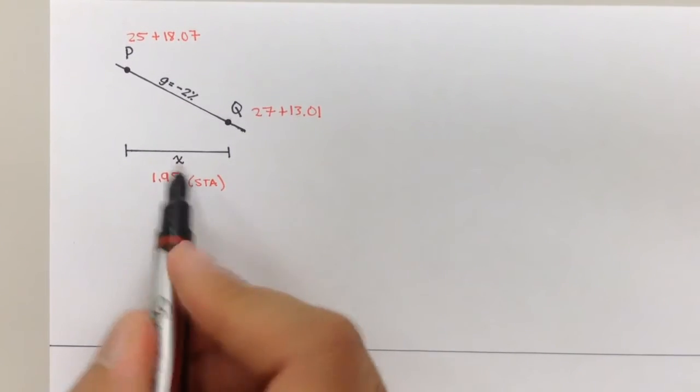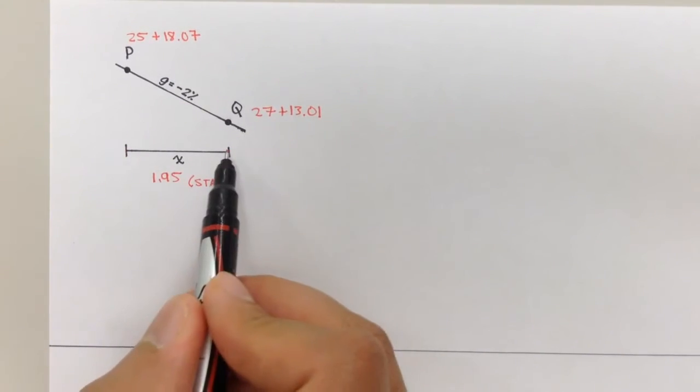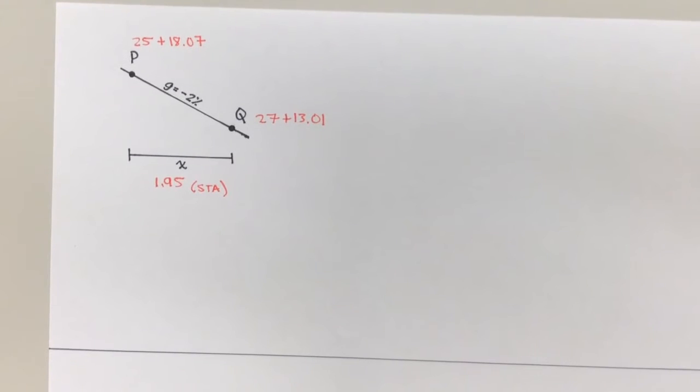So if I subtracted or if I found the difference between these two points horizontally in stations, then X would be roughly 1.95, and this is in stations. So there's 1.95 stations between points P and Q.